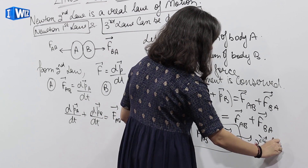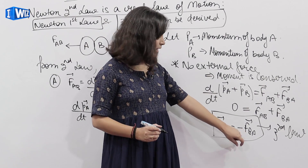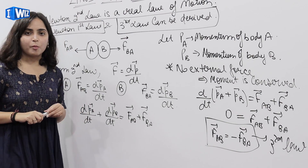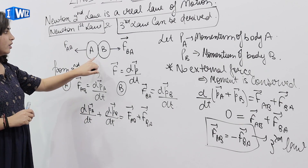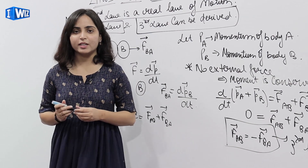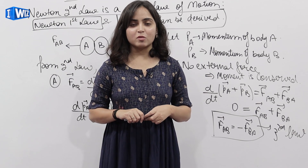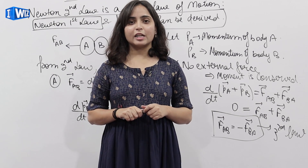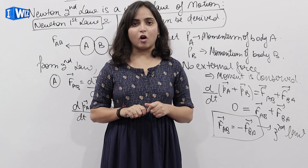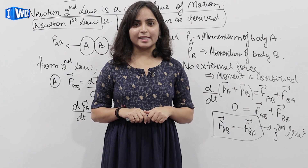That means equal in magnitude and opposite in direction — forces of equal magnitude and opposite direction are acting on two different bodies. So this was the third law of Newton derived from the second law. So this was all about free body diagrams, conservation laws, Newton's three laws, and how the second law is the real law of motion. We'll see you in the next video — till then, keep revising.